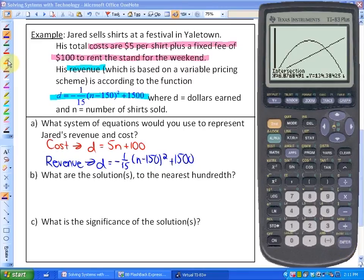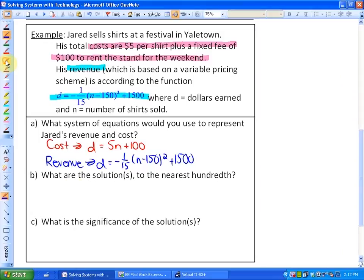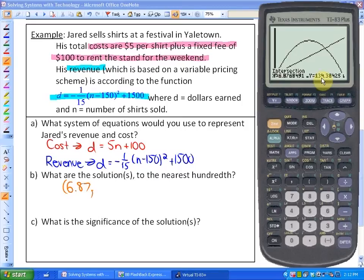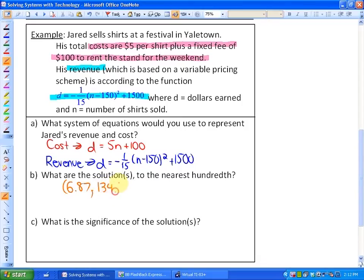In this case, d equals 6.87. So d equals 6.87, and n, which represents the number of shirts, is 134.38. This represents money and this represents the number of shirts. Wait, sorry, I'm backwards. This represents the number of shirts, and this represents the dollars. My x and y coordinates were a little bit backwards.